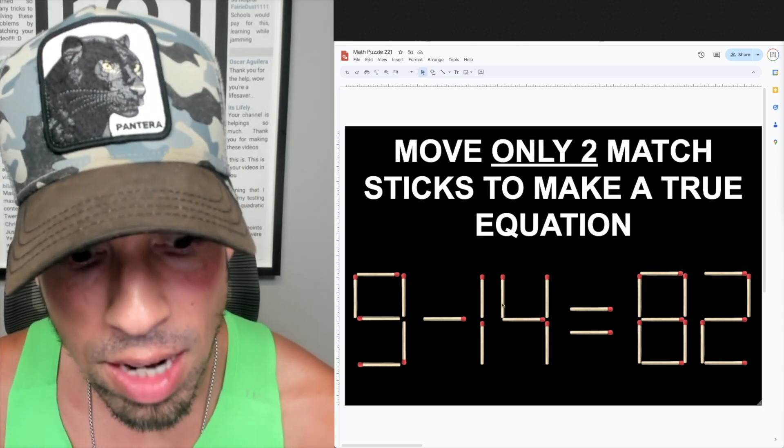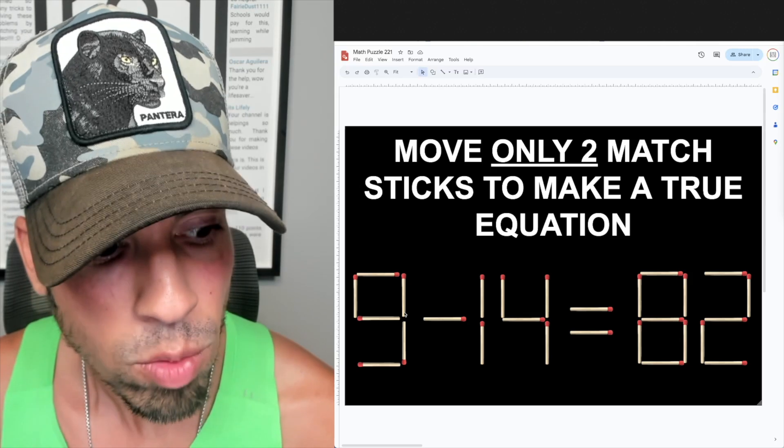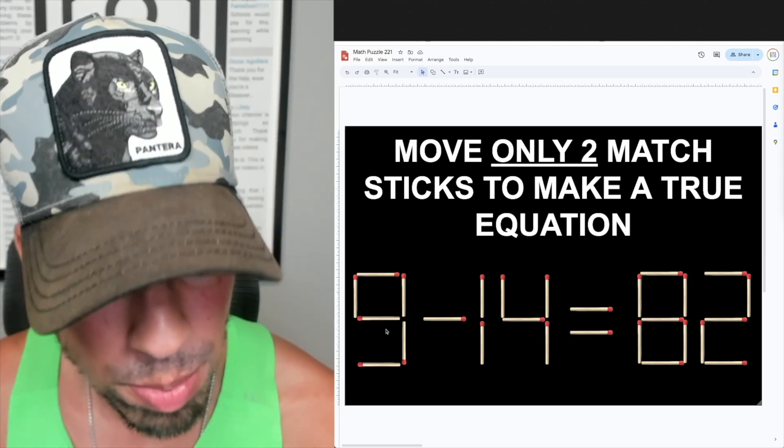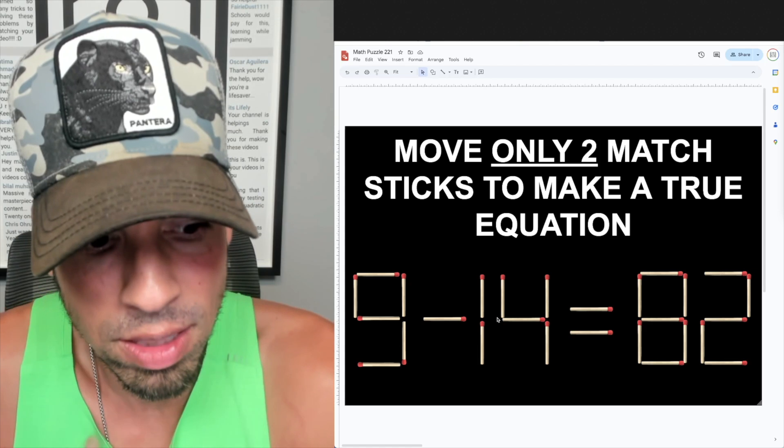So when I see this, I see 9 minus 14 equals 82. And the thing here is we have a subtraction problem between two numbers getting this big two-digit number. So my first instinct is I need to turn that into addition.